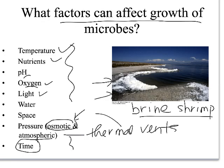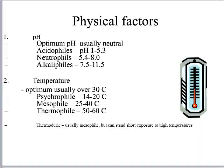There are specific vocabulary words used to describe organisms that grow under certain conditions. The optimum pH for bacterial growth is usually neutral. If something likes an acidic pH, it's called an acidophile. If it thrives at a neutral pH, it's a neutrophile. At an alkaline pH, it's an alkaliphile.